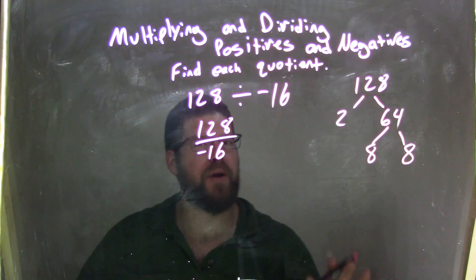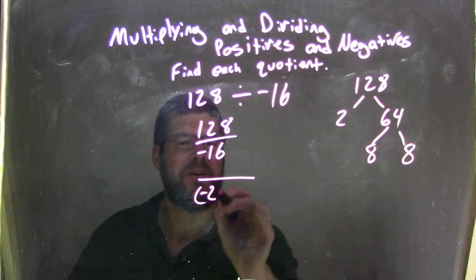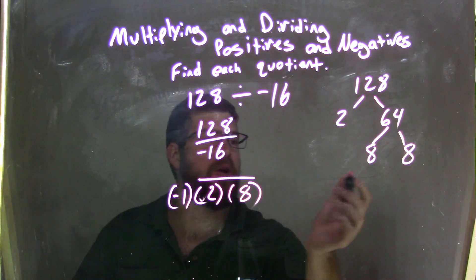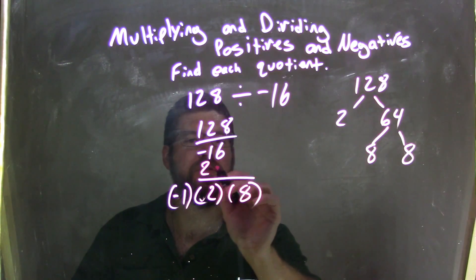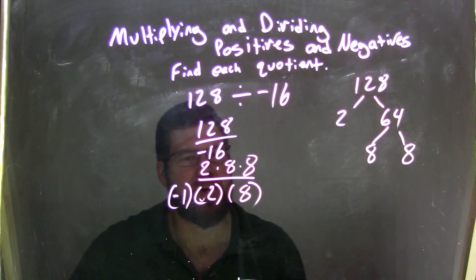And I'm actually going to stop here. I'm not going to keep breaking it down because I see a 16 in the denominator. 16 I know I can break down to be negative 1 times 2 times 8. The numerator so far is just 2 times 8 times 8. I didn't do a full prime factorization, just factored it out partly.